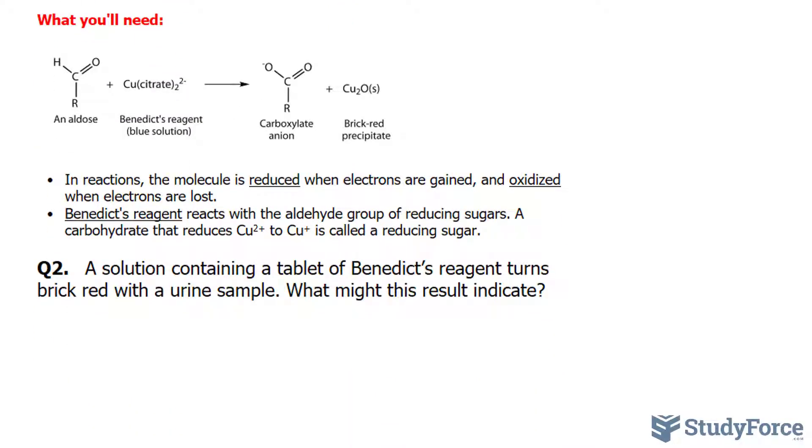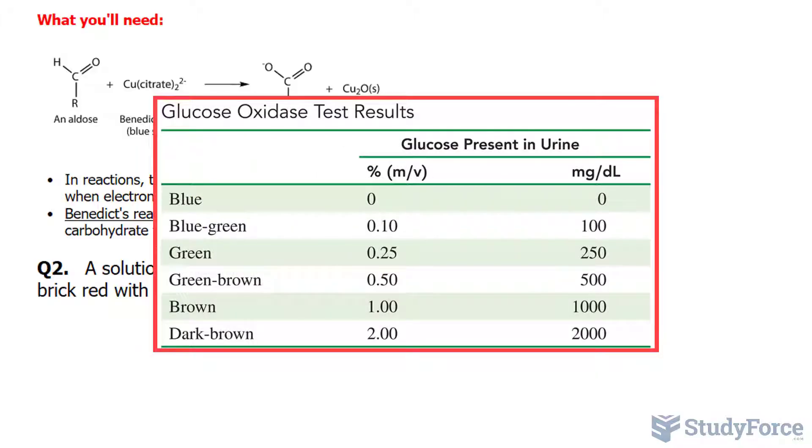In question number two, a solution containing a tablet of Benedict's reagent turns brick-red with a urine sample. What might this result indicate? If urine is turning brick-red after the solution is added, that likely means there is sugar found in the urine.